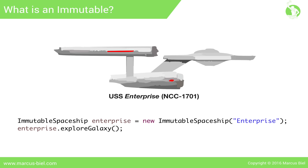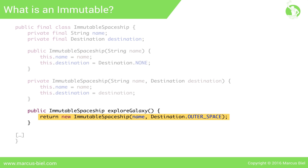So if an object is immutable, how can we modify it? How can we change this unchangeable spaceship? As it turns out, we can't — you cannot change an immutable object. Instead, you can return a new object that does reflect a change. In this case we'd return a new immutable spaceship object with a new destination value of outer space.